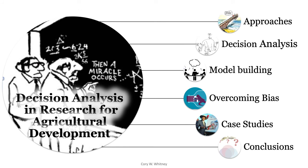This is going to be a six-part series. I will start by talking about various approaches in decision analysis and then go over technically what decision analysis is and what it's about. I'll offer some examples of model building — the nuts and bolts of the process. I'll talk about cognitive biases as a bottleneck to this approach and think about ways of overcoming biases, including approaches to incorporate expert knowledge into model building without introducing too much bias. I'll give a few case studies from Kenya and Uganda, and then I'll provide some conclusions.